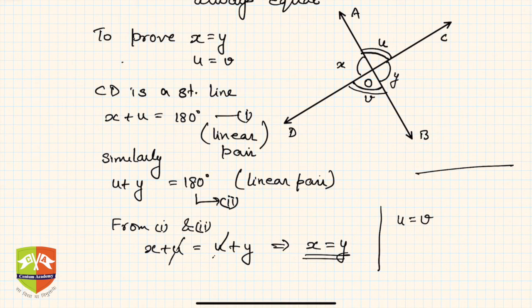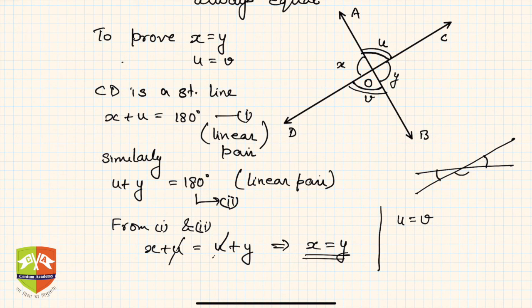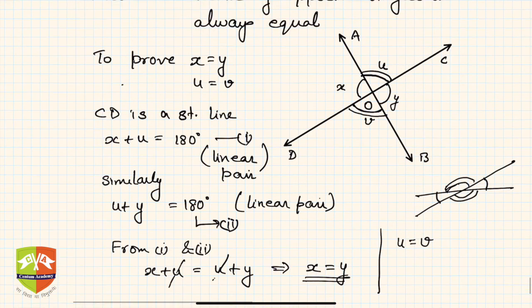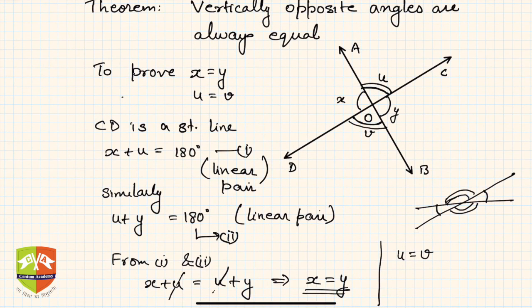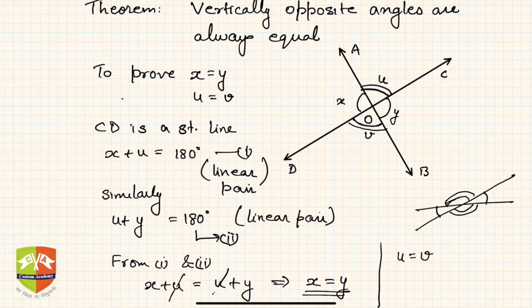The conclusion is: a pair of vertically opposite angles are always equal. So whenever two lines intersect, this angle will be equal to the opposite angle, and the other pair of angles will also be equal to each other.